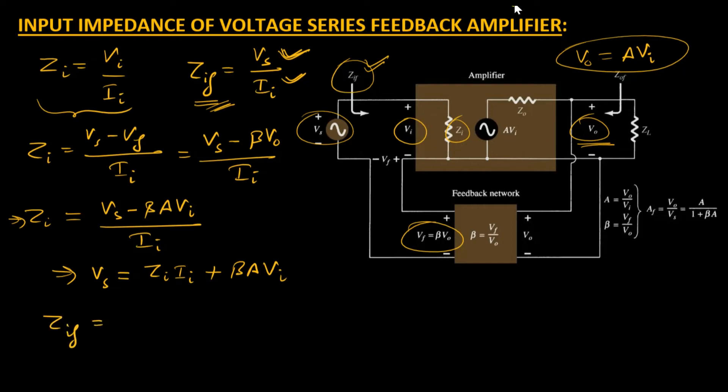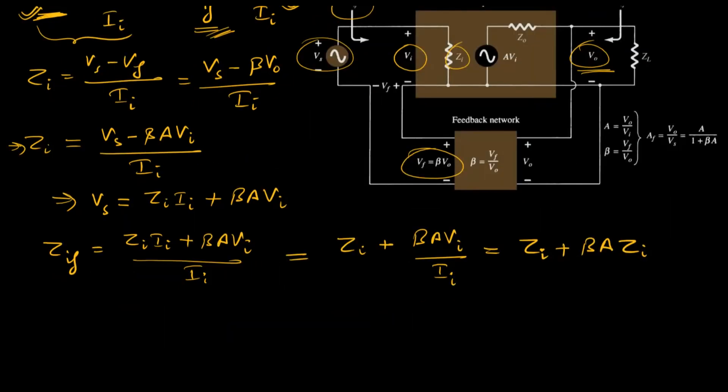Now putting this Vs in the Zif equation: Zif equals Zi·Ii plus beta·A·Vi over Ii. This can be rewritten as Zi plus beta·A·Vi over Ii. We can replace the Vi over Ii term with Zi by Ohm's law. So this becomes Zi plus beta·A·Zi. The final equation for Zif becomes Zi times (1 plus beta·A), taking Zi common.